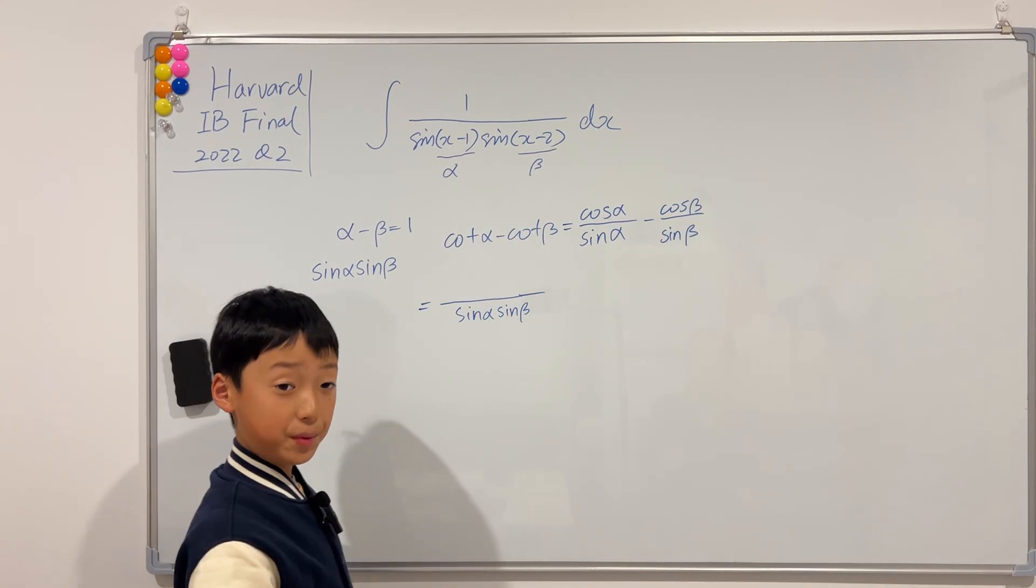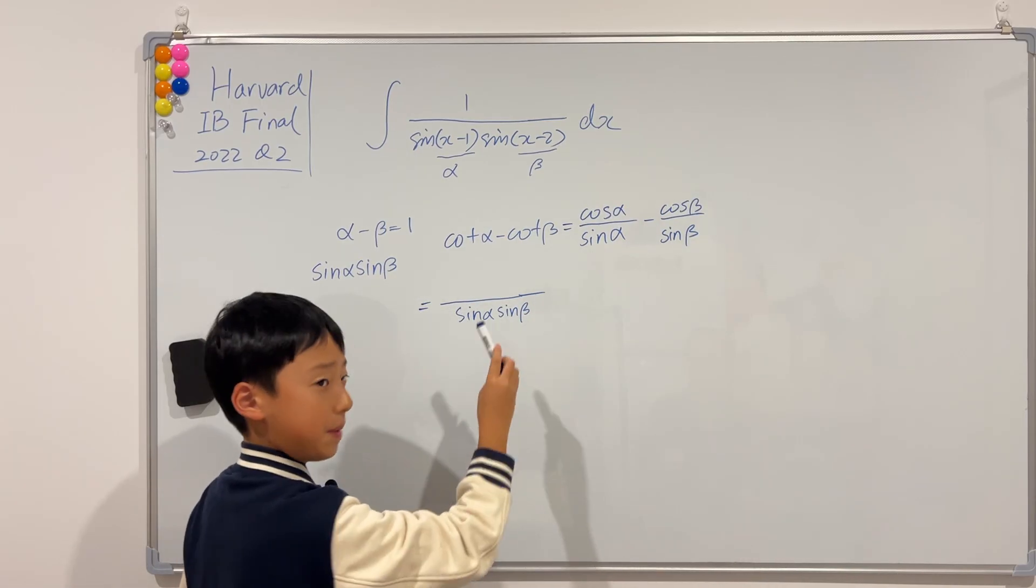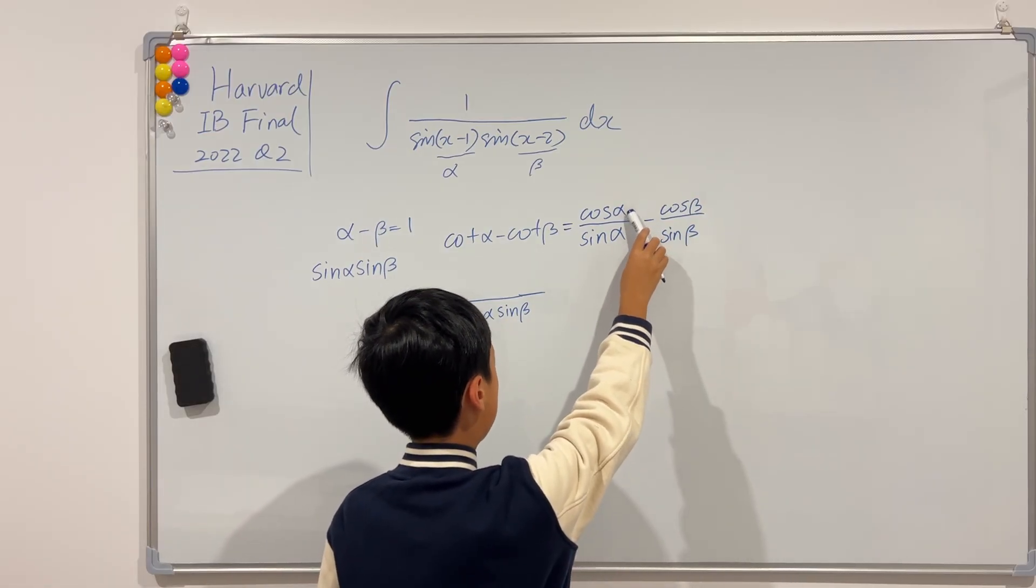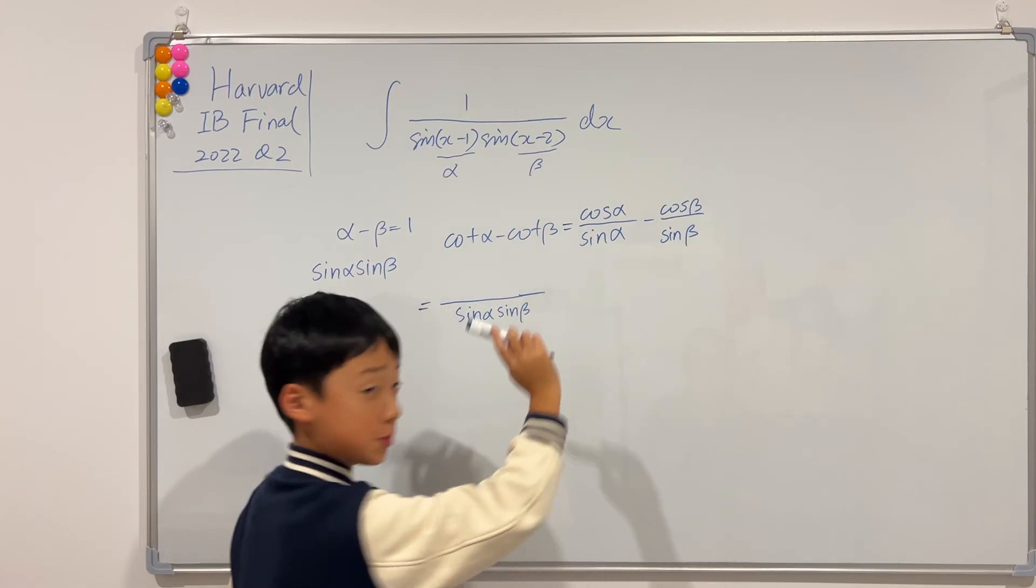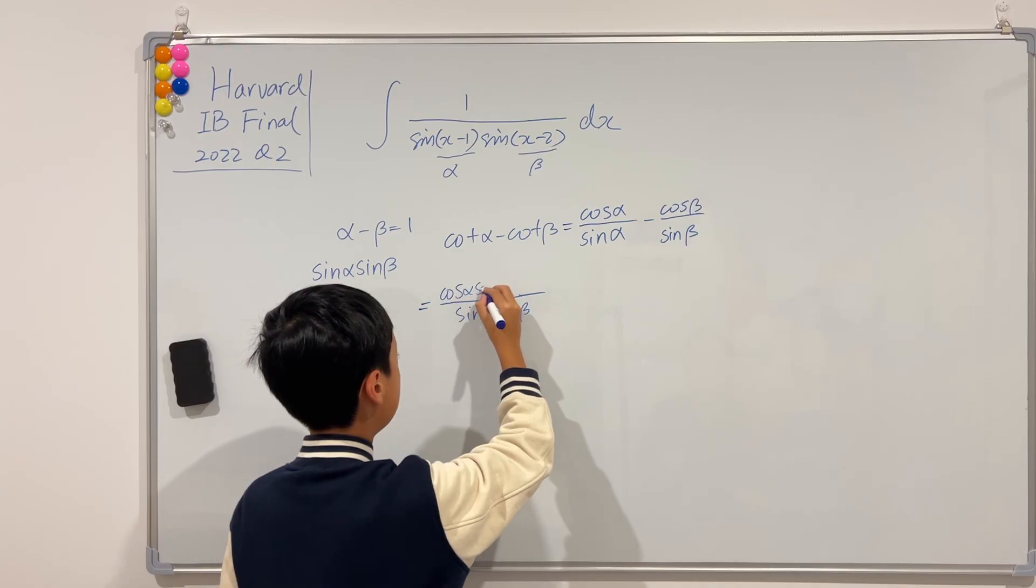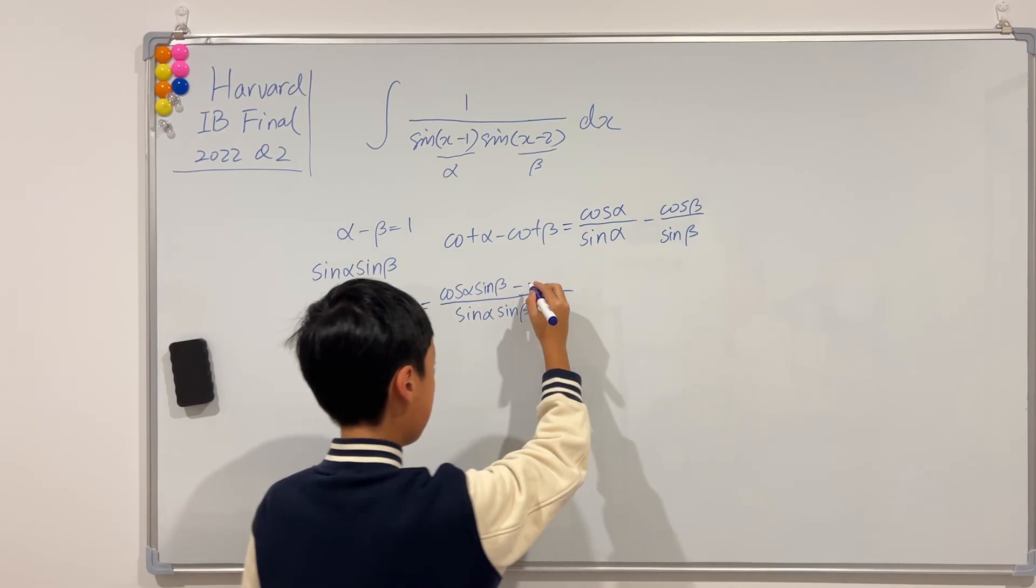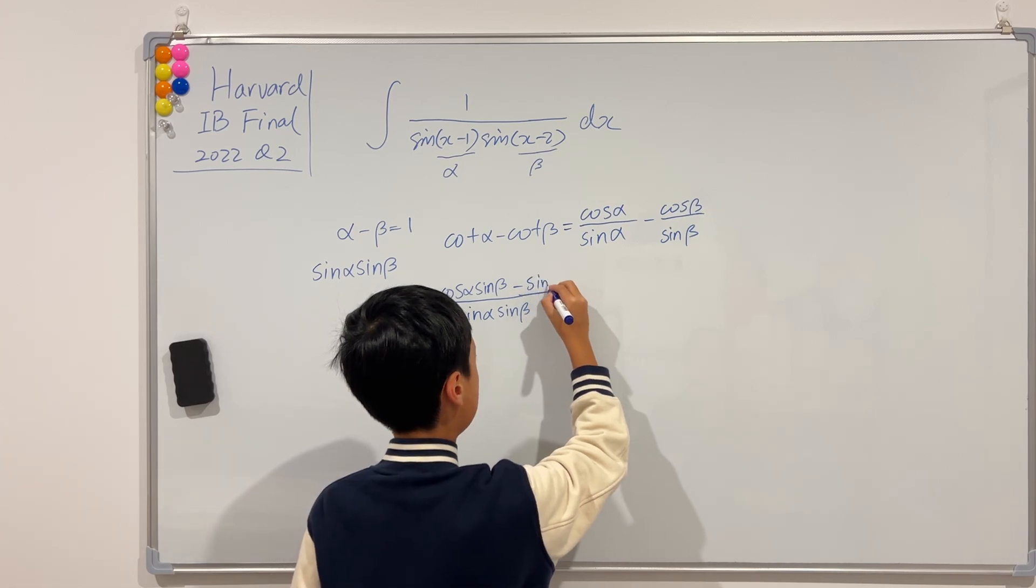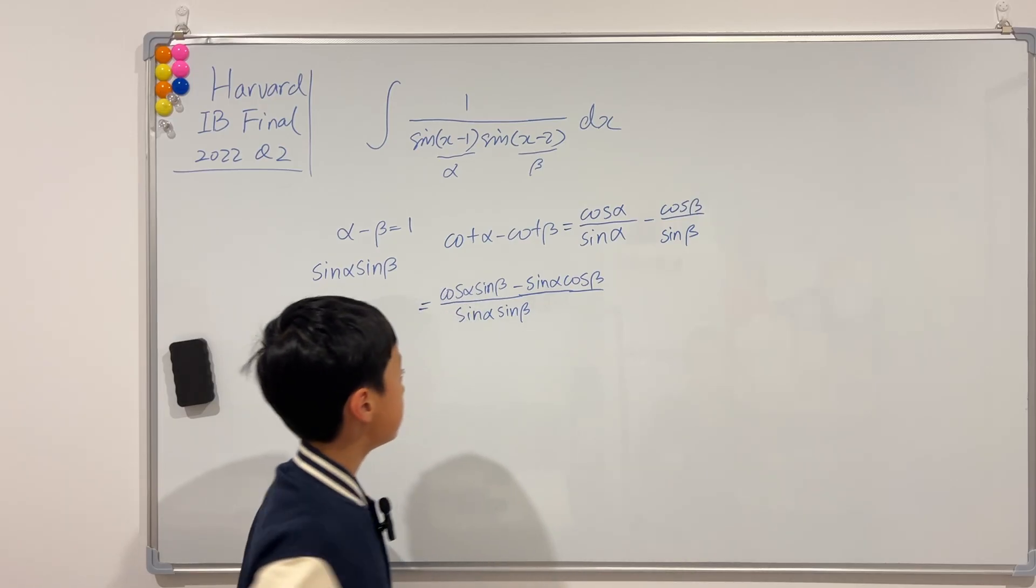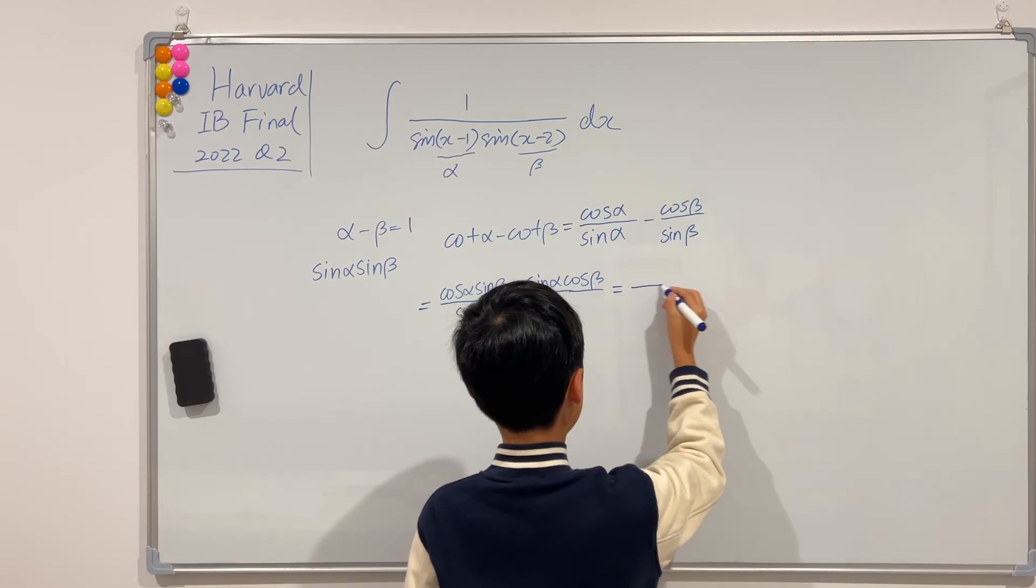And then the top is, well, if the denominator is sine alpha sine beta, then we just need to multiply it by sine beta on the top and bottom here. So, the top will be cosine alpha times sine beta. And similarly for this, it will be sine alpha cosine beta. We see the bottom is already what we want, so I'll just leave it be.